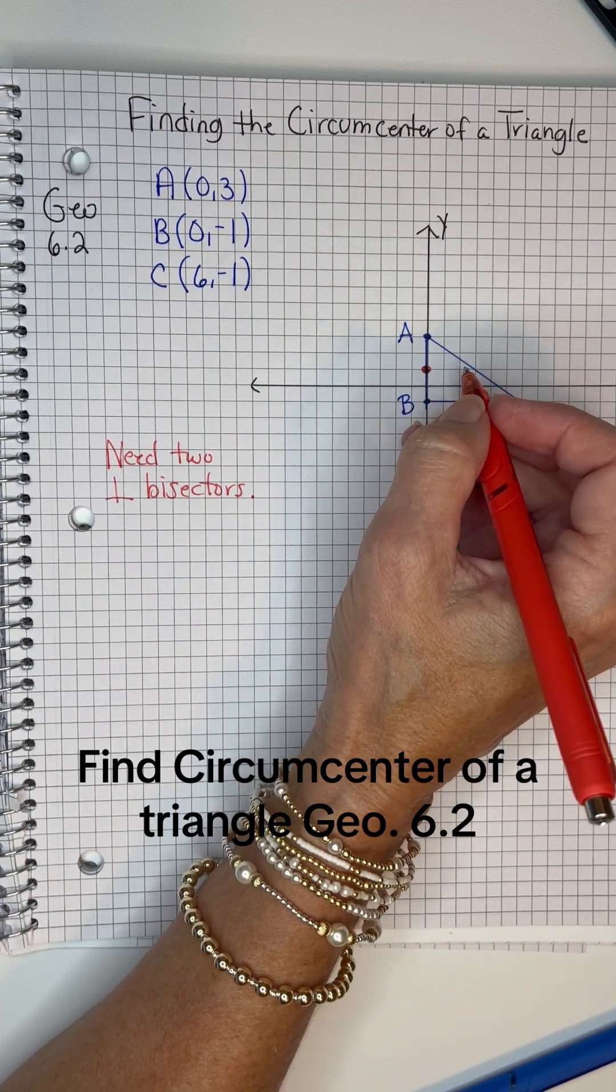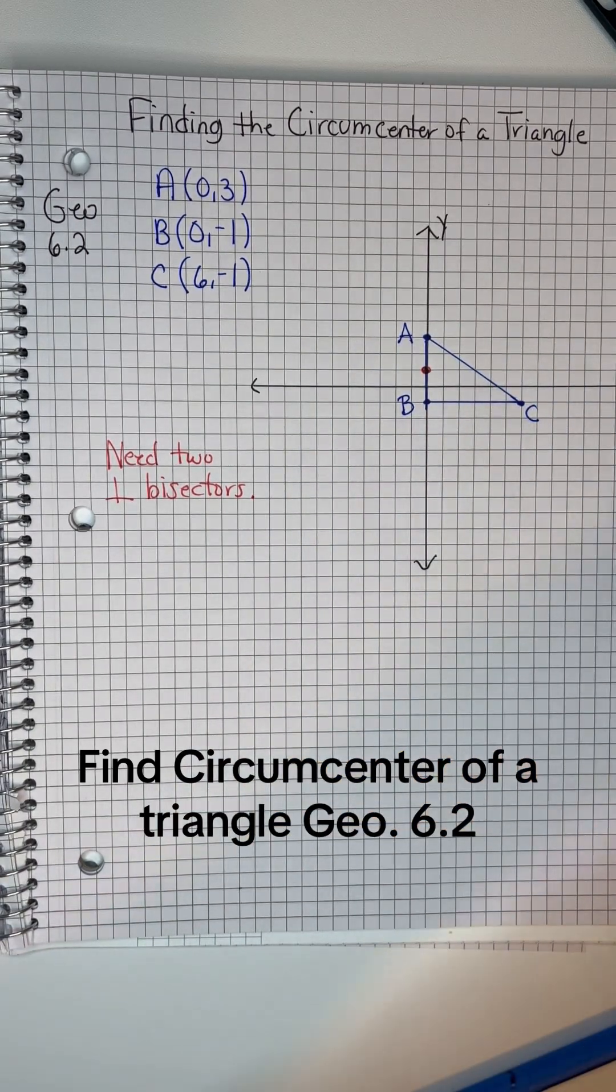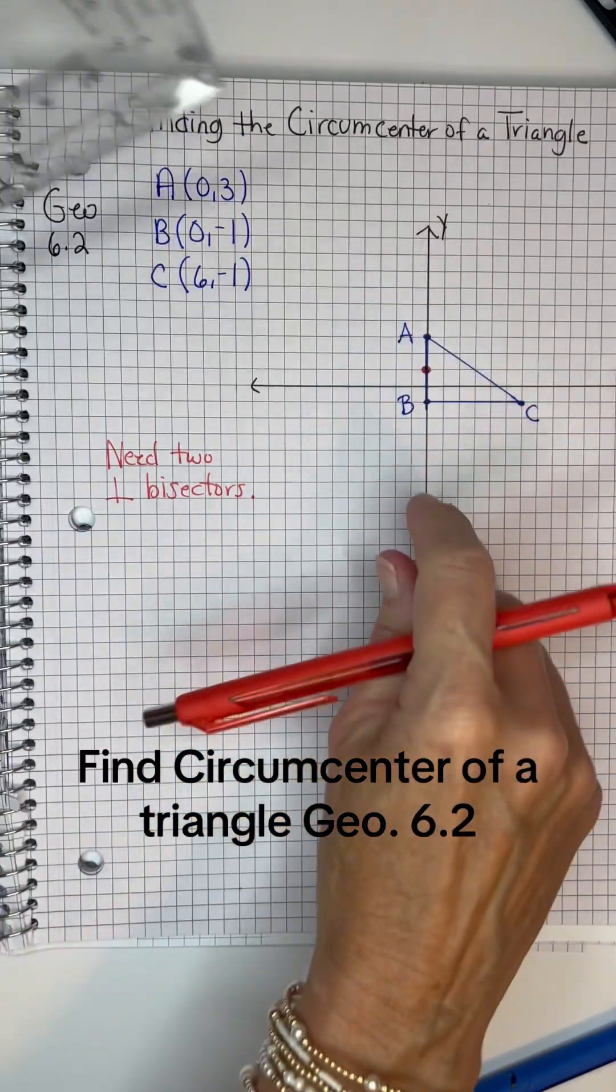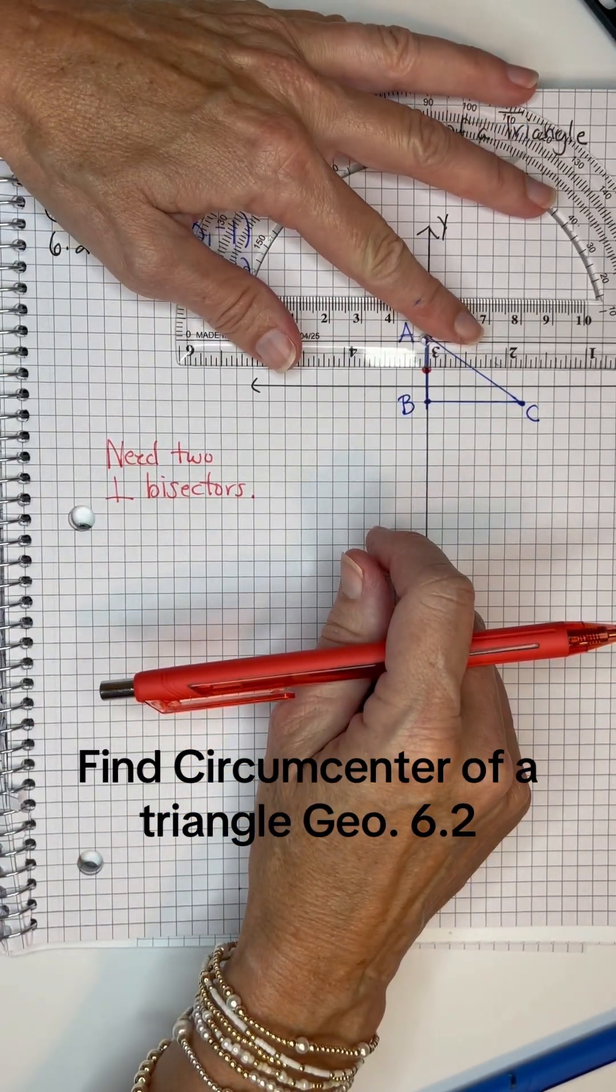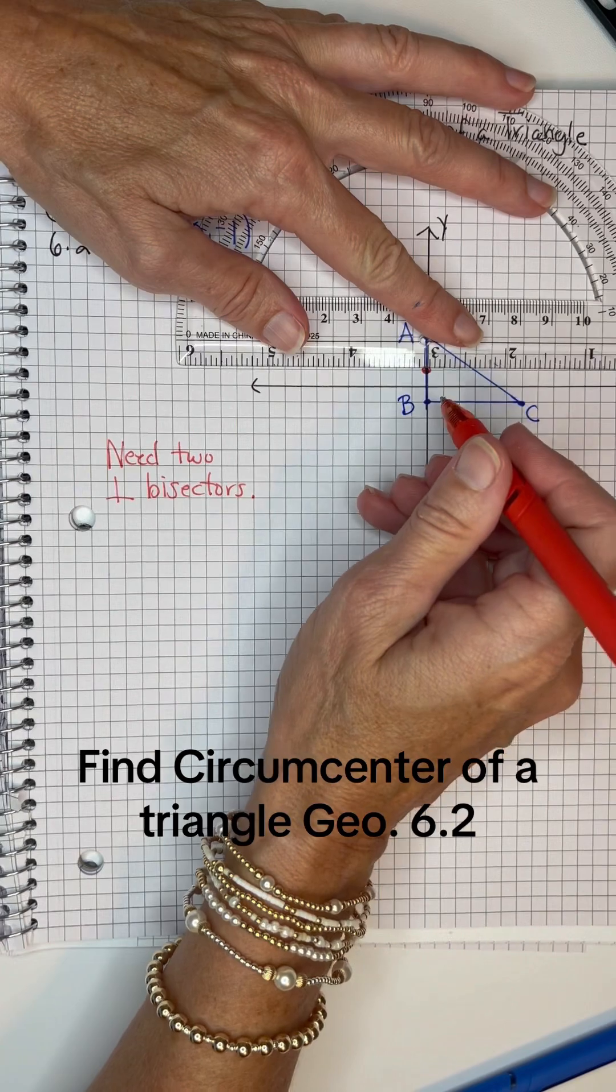And then there's a rule that said vertical angles and horizontal angles are perpendicular. So since he's vertical, the horizontal one would be through that mid-segment.